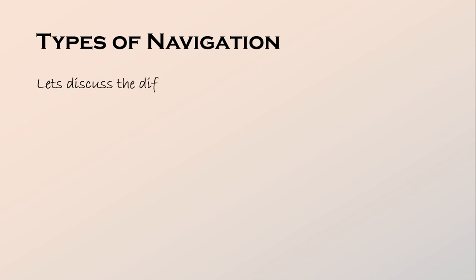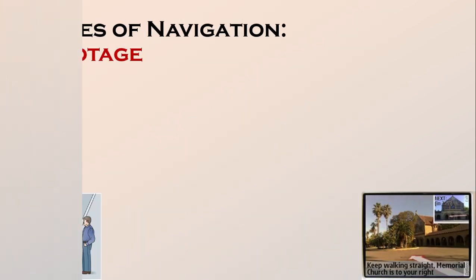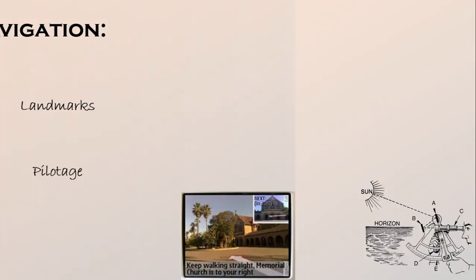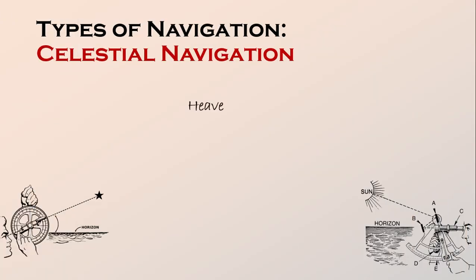Let's discuss the different types of navigation briefly. First of all, if you're using landmarks such as mountains, rivers, buildings, and signboards to navigate your path, then this type of navigation is called pilotage. However, if you rely on heavenly bodies like sun, moon, and stars to track your position, then this is celestial navigation.